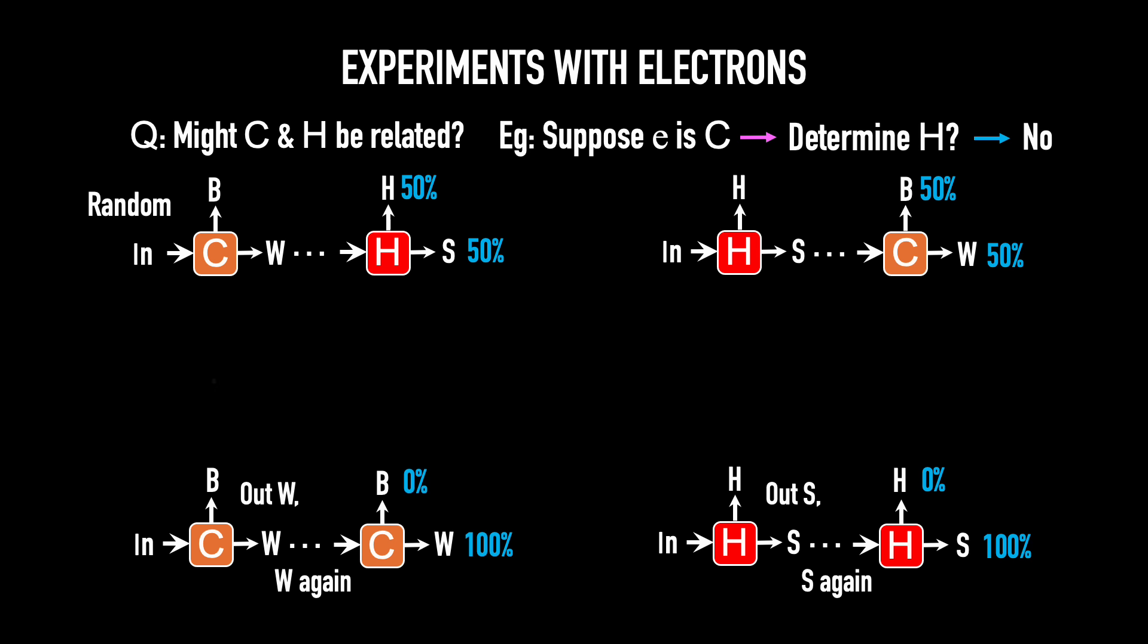Let's try another experiment. First a color box, then a hardness box, then another color box. So color in, black and white out. We take the white electrons and send them into the hardness box. They come out hard and soft. Now take the soft ones and send them into the second color box. The question is, what do we predict? What percentage black, what percentage white? Let's think through the logic. Anything reaching the second hardness box must have first been measured as white by the color box.